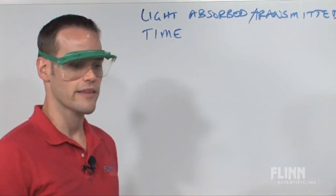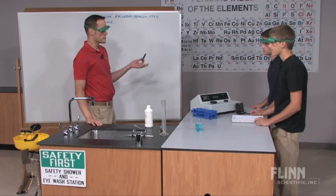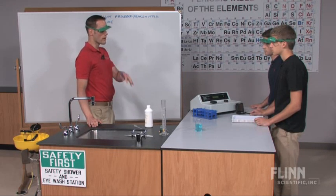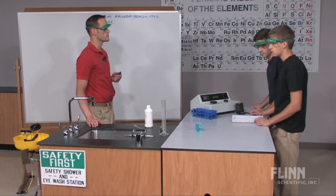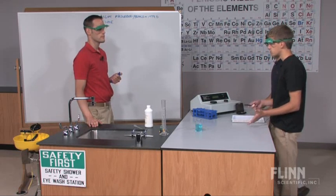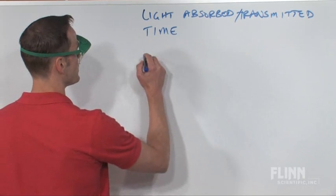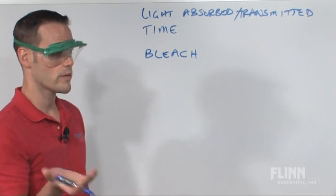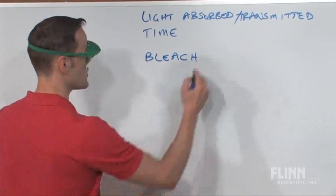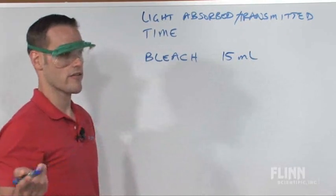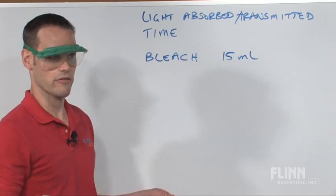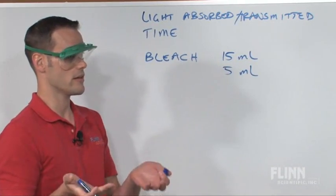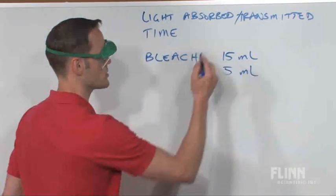Since we know about reaction rates from introchemistry, what things could we do to modify this reaction? Students suggest changing the concentration of bleach. We started with 10 milliliters, so one group could try 15 milliliters, another could try 5 milliliters, and another could try 20 milliliters — double the original — to see if the rate scales proportionally.